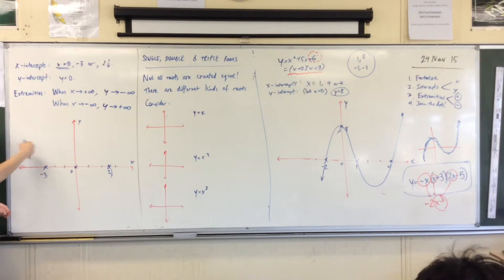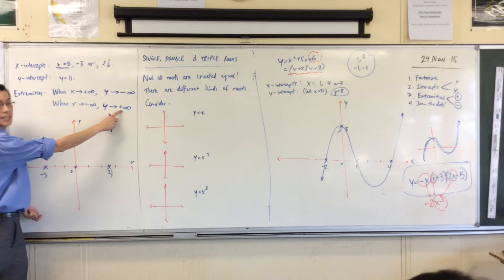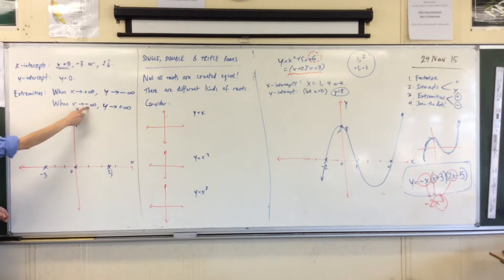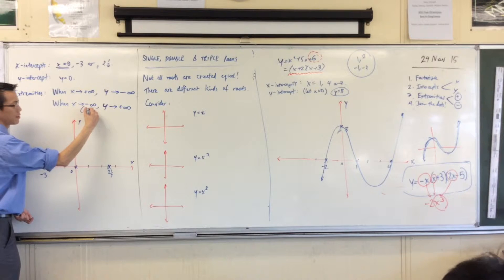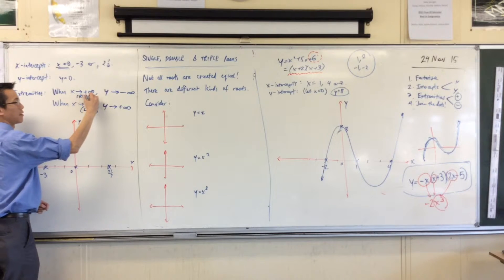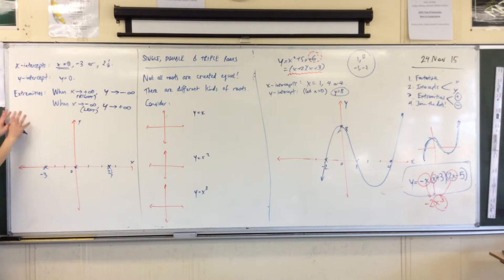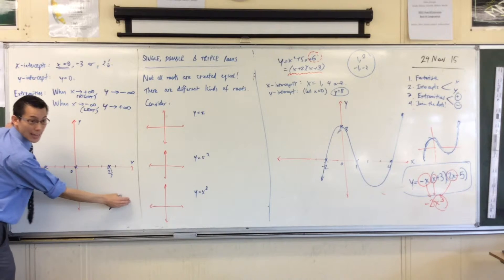So that means that off on the left-hand side, I'm coming from up here. I'm coming from a positive infinity when I'm coming from the left-hand side. That's the left, negative infinity. Whereas when x is positive infinity, that's at the right. And it's going down. It's dropping like a rock. So I'm starting from up here, and I'm going to end down there.